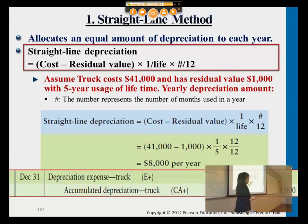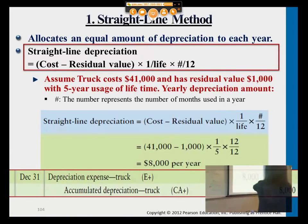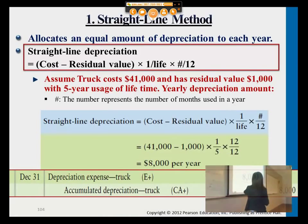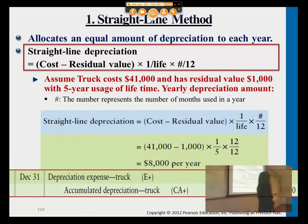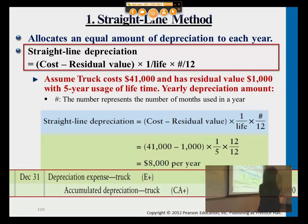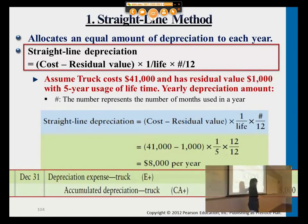Straight-line depreciation is the simplest one — it's also the one we have been talking about all along. In this example, the cost of the truck when we purchase it, plus all the transportation costs, is $41,000. It has a leftover value of $1,000, meaning after using it for five years, when we sell it, we can get $1,000 back. That's the dollar amount we don't want to depreciate — it's not part of the depreciable cost, so we subtract it.